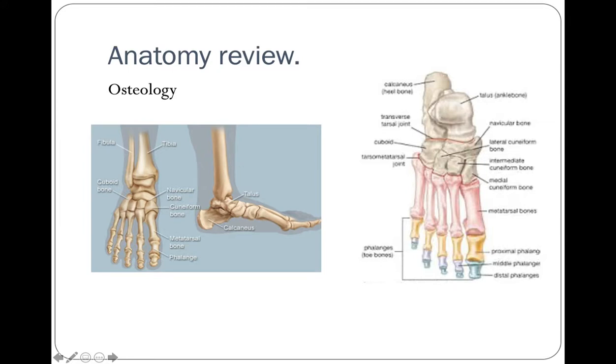The forefoot includes the five metatarsals and the phalanges. Remember there are two phalanges in the hallux. The prominent bony landmarks are the navicular tuberosity, the medial malleolus, the lateral malleolus, and obviously the calcaneus, all very easily palpated under the skin.